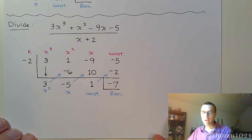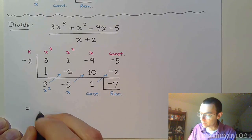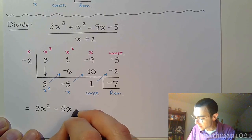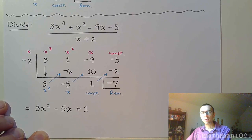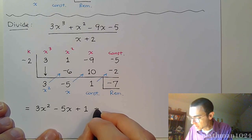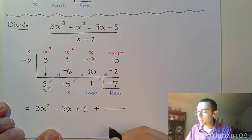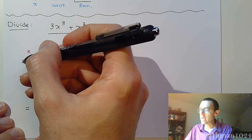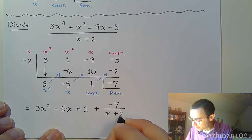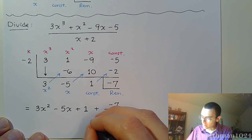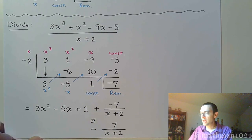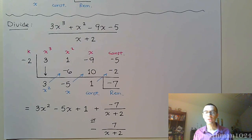So this division problem gives us the quotient 3x² − 5x + 1. For the remainder term, put a plus sign and then write the remainder as a fraction: the remainder −7 goes in the numerator over the divisor, which is x + 2 — not the negative 2 that's K, but x + 2. You can write it as plus (negative 7)/(x + 2) or equivalently minus 7/(x + 2); either way it means the same thing for that remainder piece.